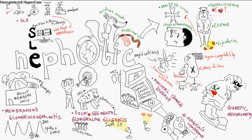It has a segmental distribution in the glomeruli. Treatment is prednisone. Most people progress to end-stage renal disease in 5 to 10 years. It's associated with heroin use, morbid obesity, and HIV infection.